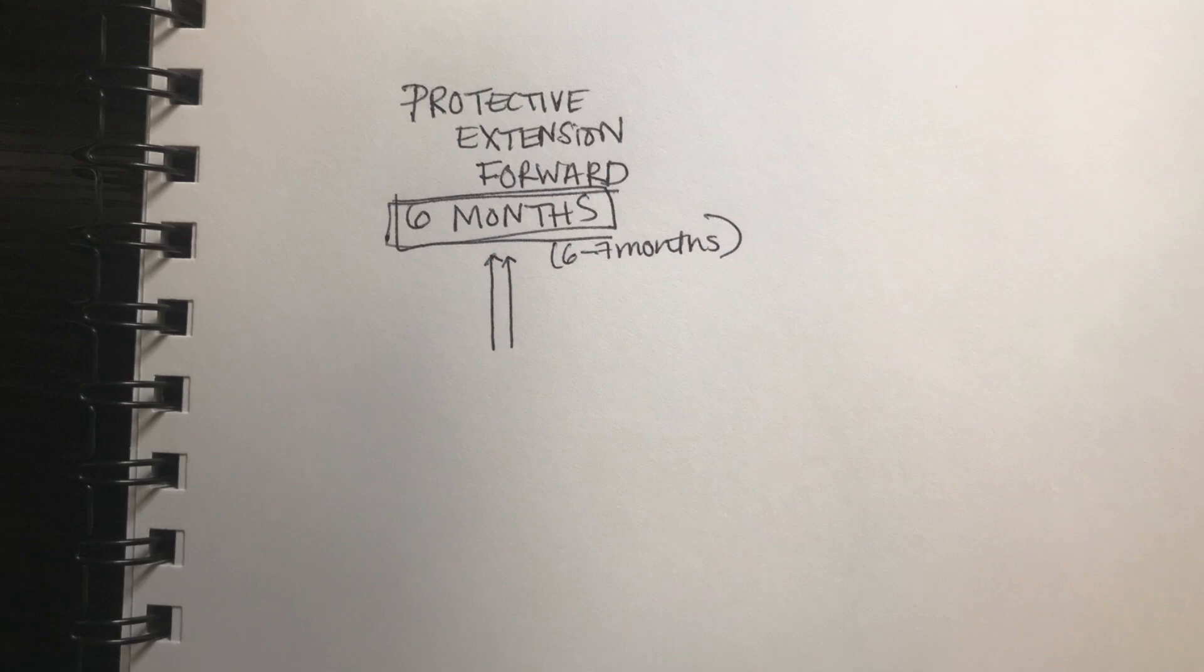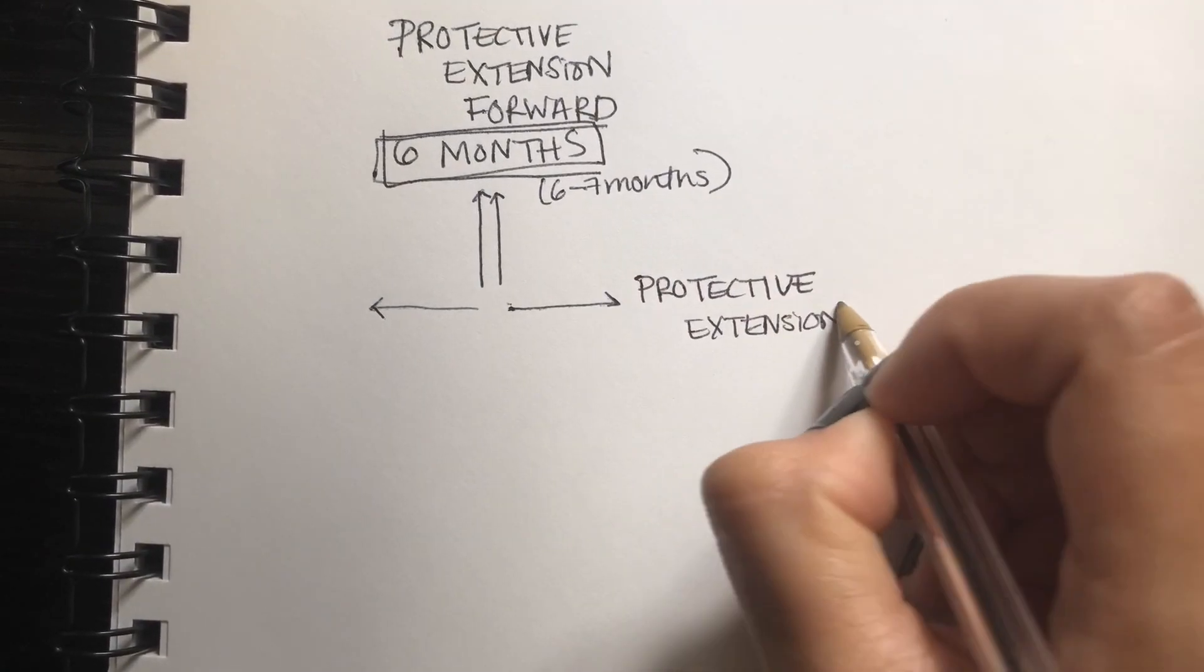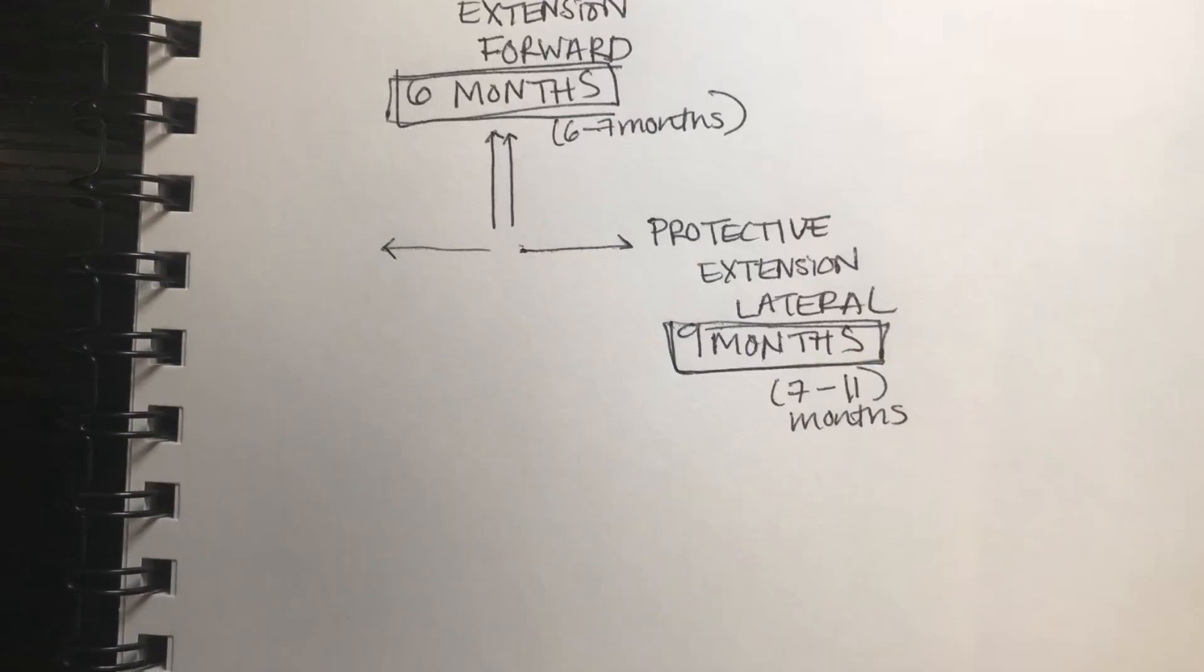So the next reflex is your protective extension lateral reflex. You'll typically start seeing this around 9 months. The way you test this is you have the baby in a sitting position, and then you kind of tip them off balance towards the side, and the baby should have a lateral arm extension.